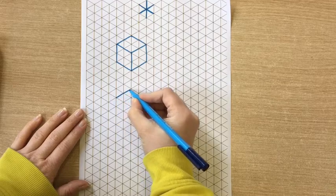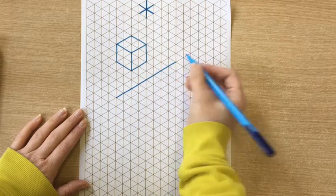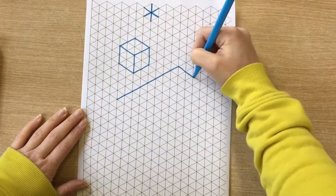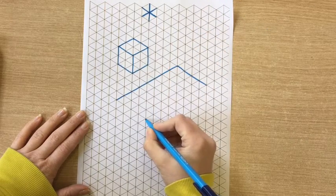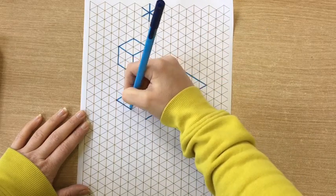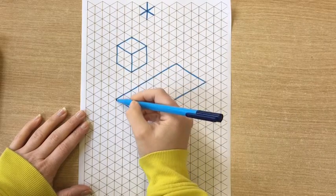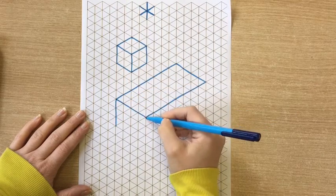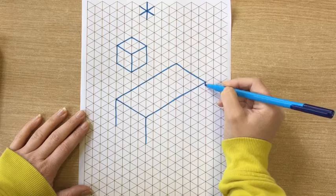So obviously for a rectangle you would just make one side a lot longer than the other. Still sticking to the lines on the grid. You don't want to draw a line that isn't on the grid.